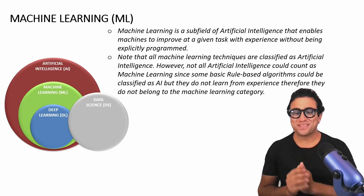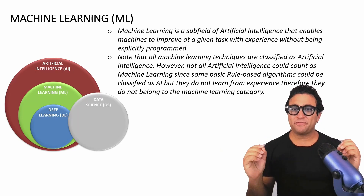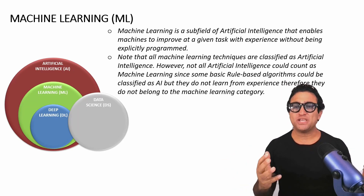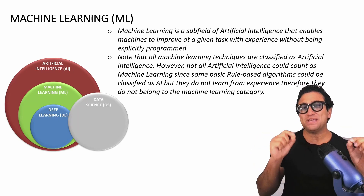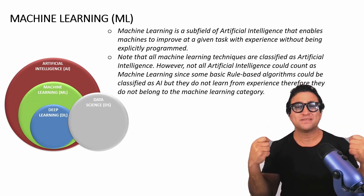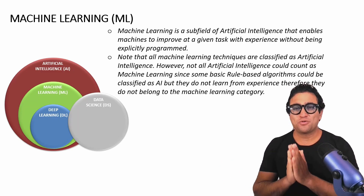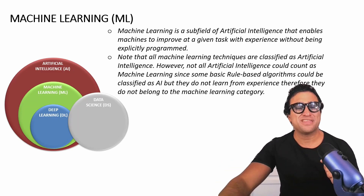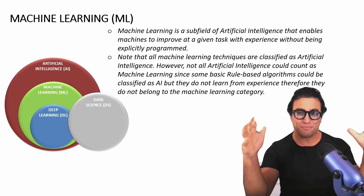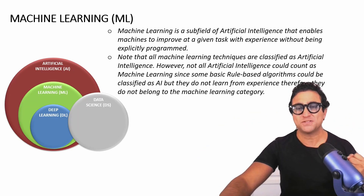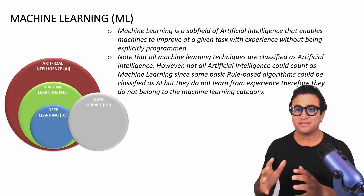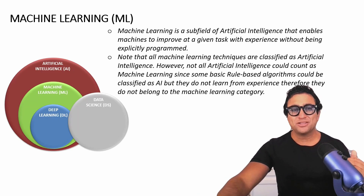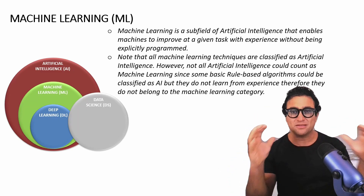So what about machine learning? Machine learning is a subfield of artificial intelligence that enables machines to improve at a given task with experience and without being explicitly told or programmed what to do. Please note that machine learning is a subset of that big umbrella, which is artificial intelligence, and all machine learning techniques are classified as AI.